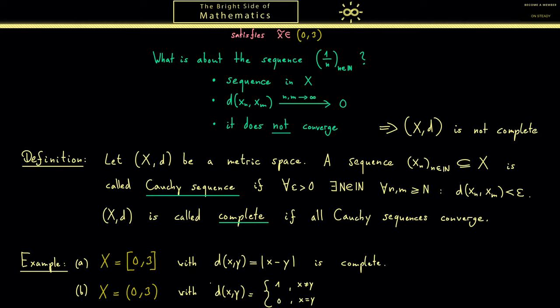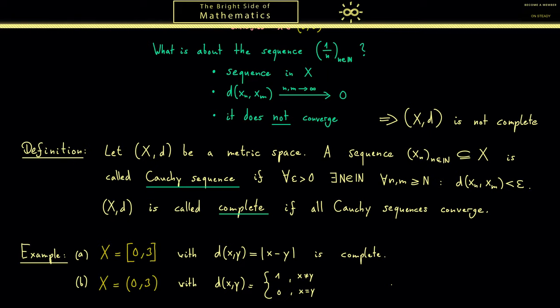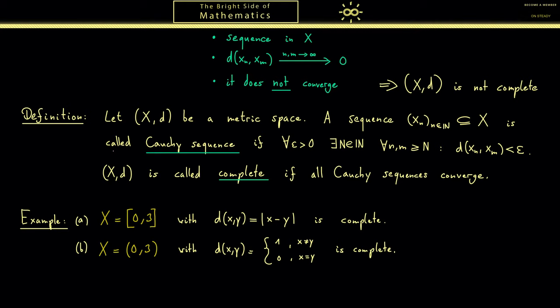Now my claim is this is also a complete metric space. Indeed, that's not hard to show. Now we just choose an arbitrary Cauchy sequence here. Then we know this whole thing here holds for all epsilon, so I can just take 1. And I want to have epsilon as 1 half.